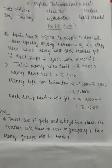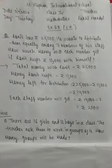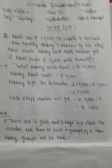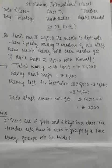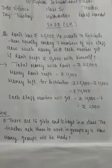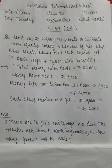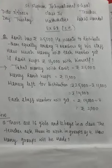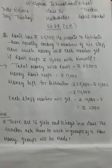So to solve this, first we have to write the solution. Total money with Ronit — kitne hai? 25,000. Then money Ronit keeps — kitne rakhe usne? Rupees 11,000. Next is money left for distribution — toh isko pata karne ke liye kya karenge? Subtract. So 25,000 minus 11,000 is equal to 14,000.